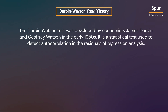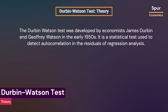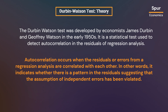The Durbin-Watson test was developed by economists James Durbin and Jeffrey Watson in the early 1950s. It is a statistical test used to detect autocorrelation in the residuals of regression analysis. Autocorrelation occurs when the residuals or errors from a regression analysis are correlated with each other — in other words, it indicates whether there is a pattern in the residuals, suggesting that the assumption of independent errors has been violated.